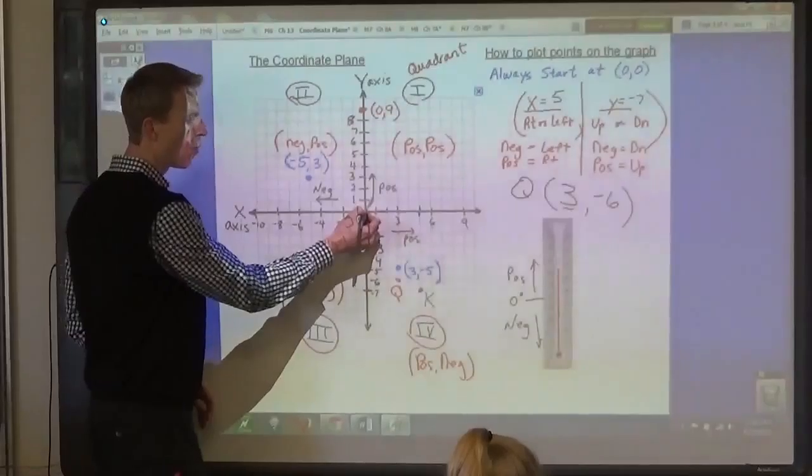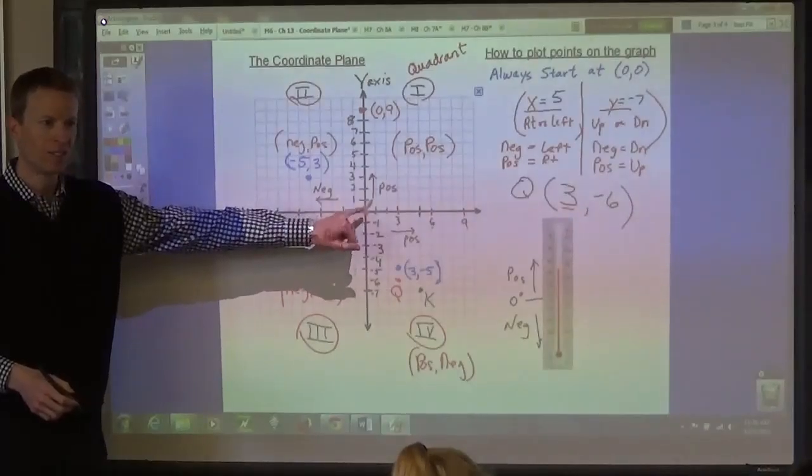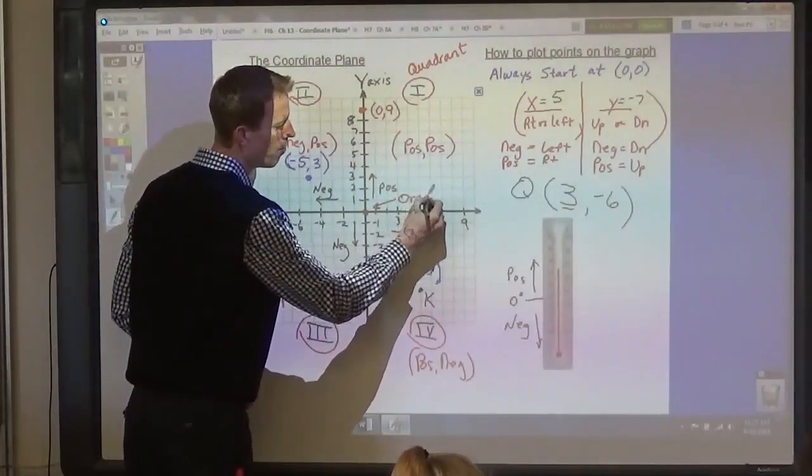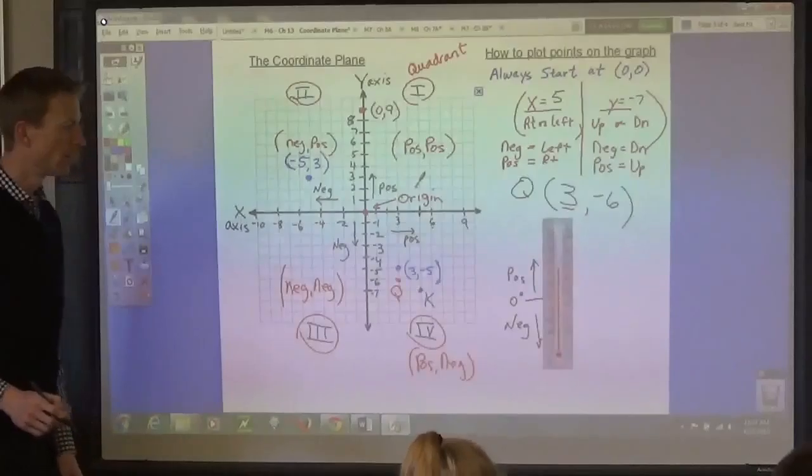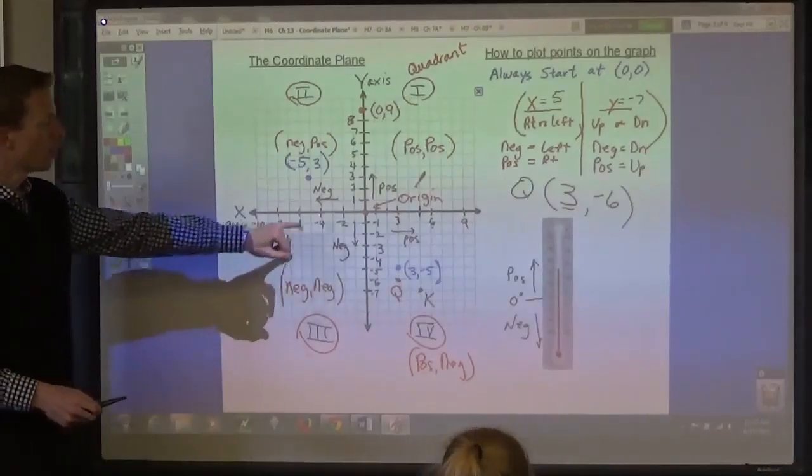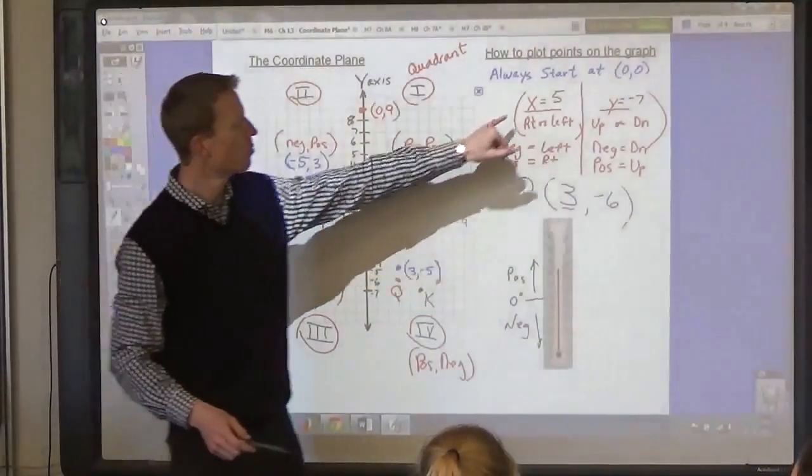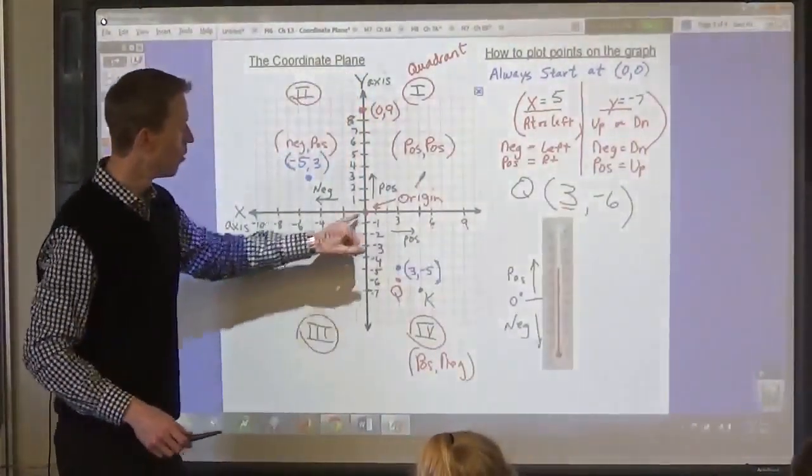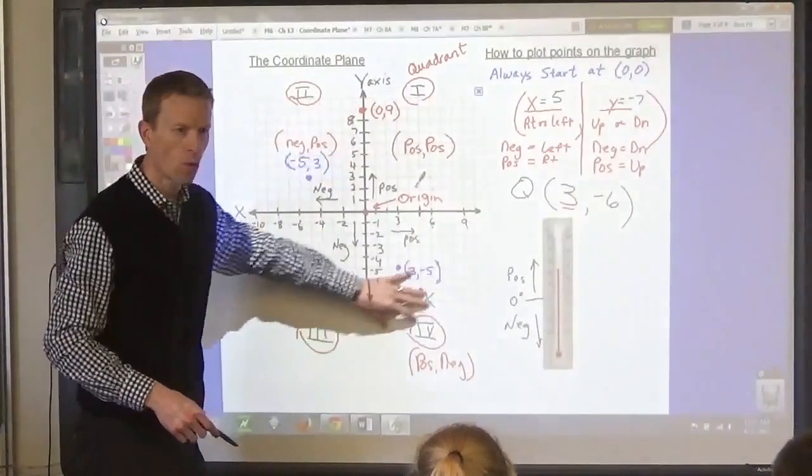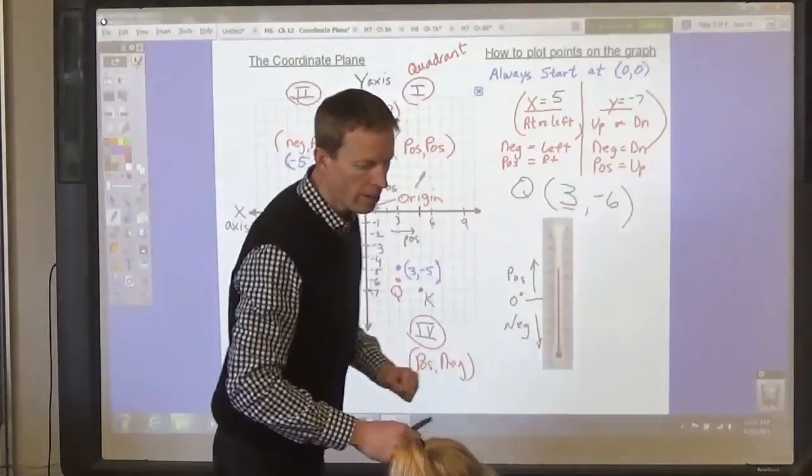What are the coordinates of this point? 0, 0. We call that point the origin. This is called the origin. When you are going to a point, you always start at 0, 0. If we're going to go to this point, 5, negative 7, we would start at 0, 0. Any questions about the coordinate plane? Some of the features of it? Then let's go to your assignment.